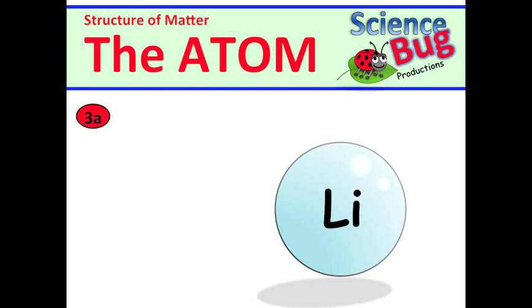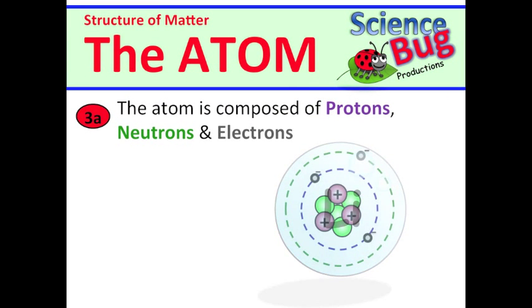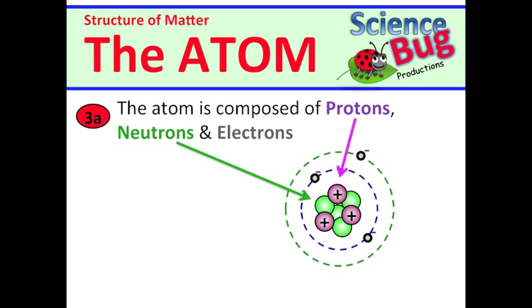And today we'll be going over the parts of the atom. Standard 3a tells us that the atom is composed of protons, neutrons, and electrons.